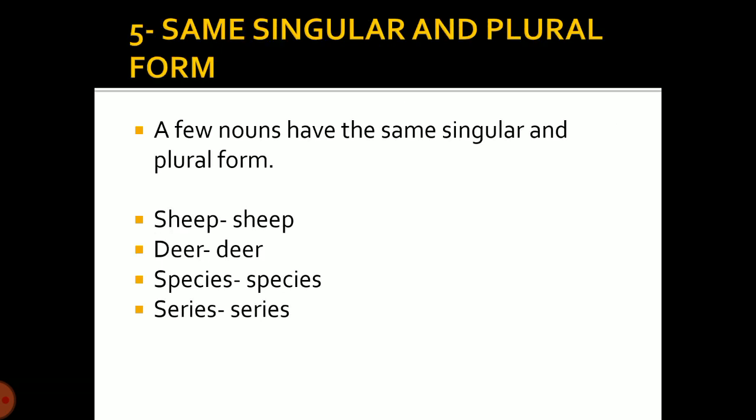Some singular nouns have the same form in the plural as well. For example: the plural of sheep is sheep, the plural of deer is deer, the plural of species is species, and the plural of series is series.